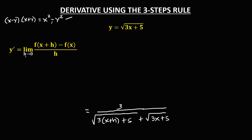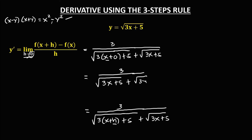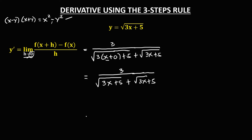In the formula, since h approaches 0, we substitute 0 for h. This gives us 3 over the square root of 3x plus 5, plus the square root of 3x plus 5.